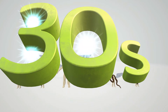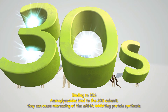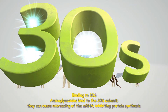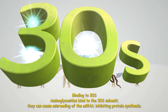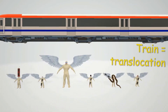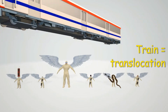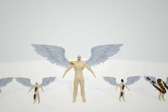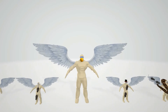This reminds us that aminoglycosides cause irreversible inhibition of the initiation complex through binding of the 30S subunit. They can cause misreading of the mRNA, thus inhibiting bacterial protein synthesis. The train exploding on top of them helps us remember that they also block translocation.